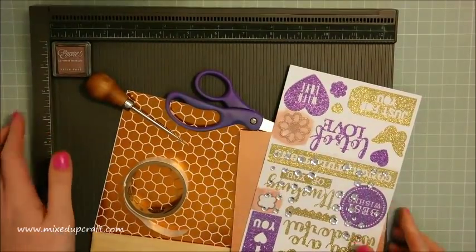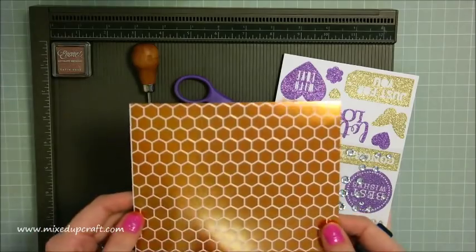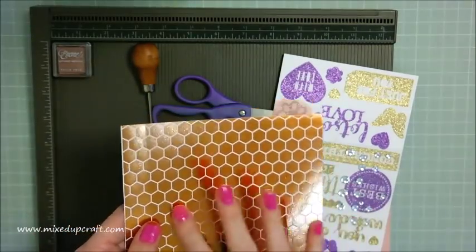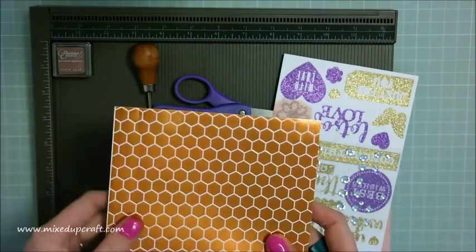So to make this one, in the January craft kit there were four pieces of 6 by 6 paper. Two are all rose gold and the other two are rose gold and turquoise color.